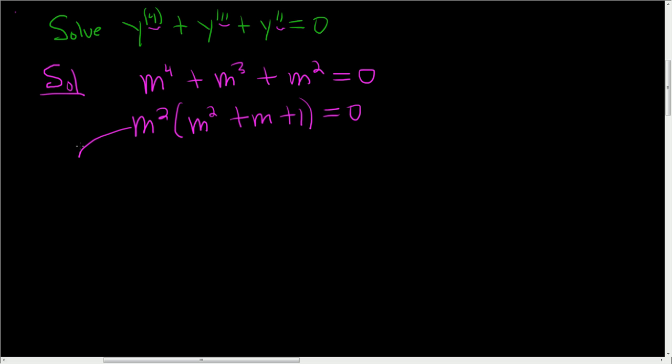Now this piece here is easy. Because here we get m equals 0, and the multiplicity is 2. Remember we need the multiplicity in order to get the solution.